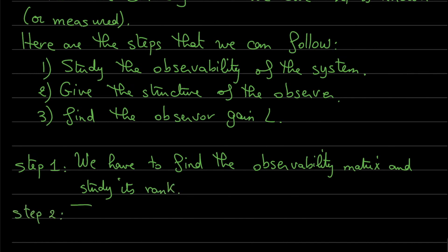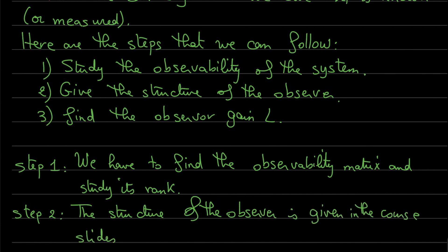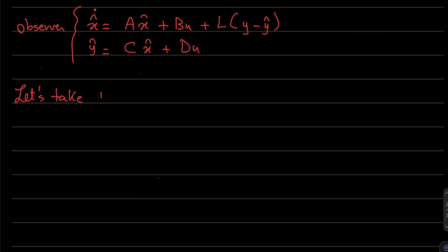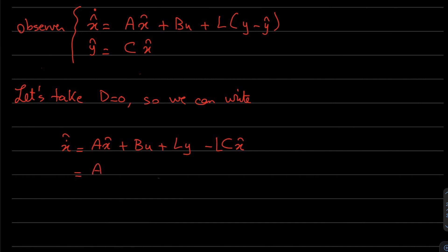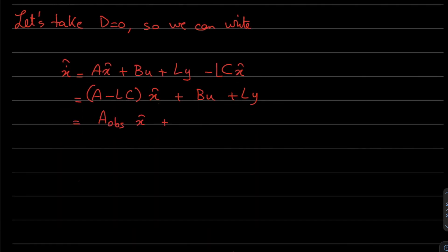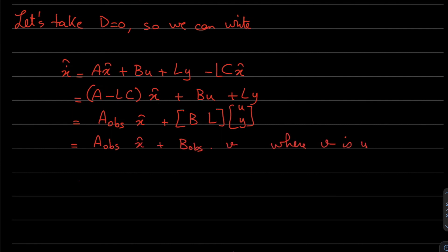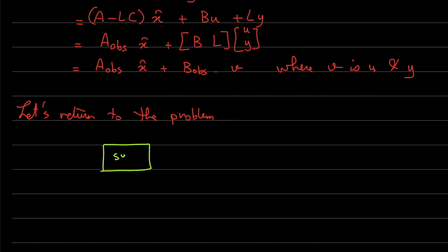For step two, the structure of the observer is given in the course slides. Setting D equal to zero, we can write the estimated state X-hat as a function of A, B, L, and C. Grouping all the matrices, we find A_observer times X-hat plus B_observer times U, plus L times V, where V is the concatenation of U and Y.